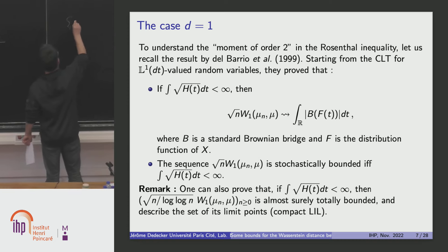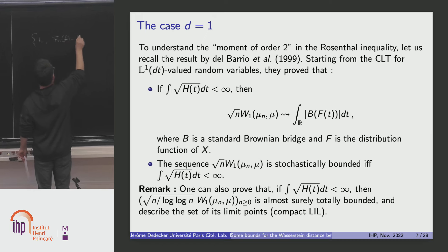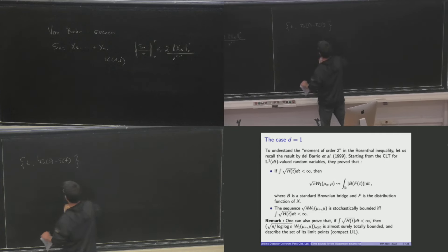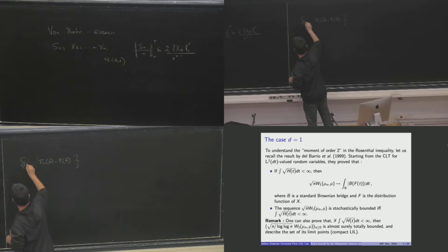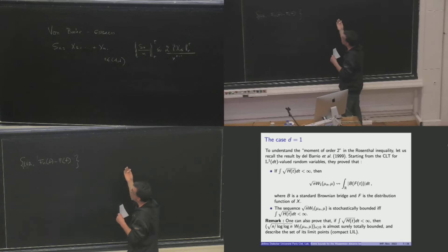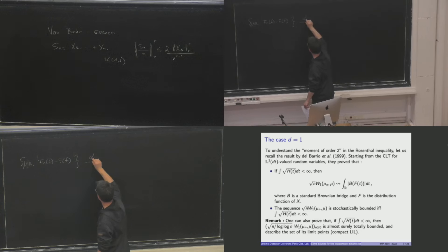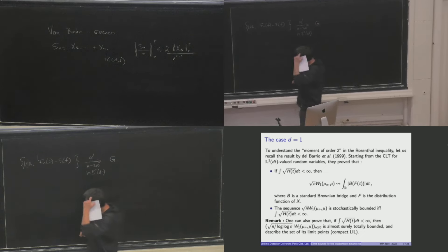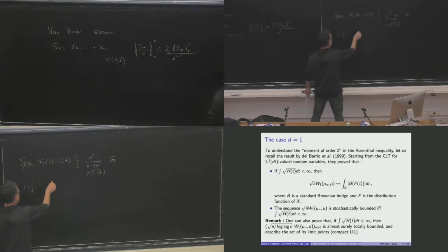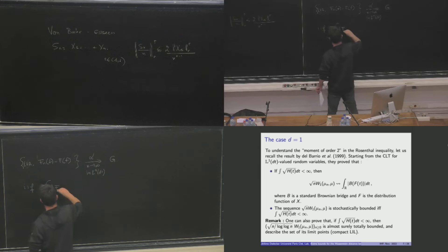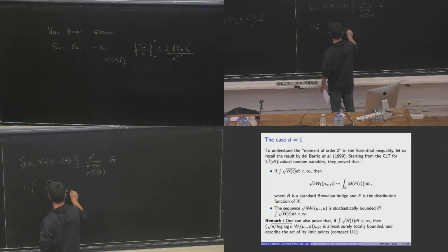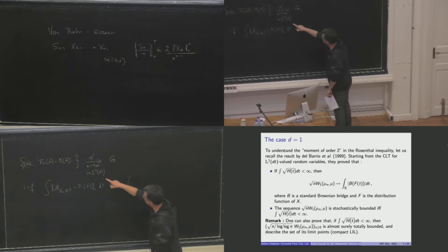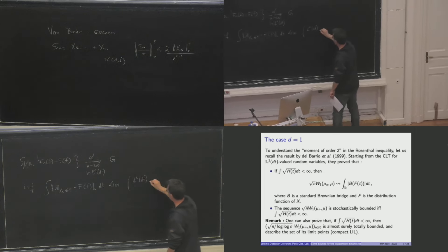If you look at these processes with T in R and in L1, we know that this quantity converges in distribution as N goes to infinity in L1 to a Gaussian process G, if and only if the integral of the L2 norm of the indicator of X1 less than T minus F(T) dt is finite.